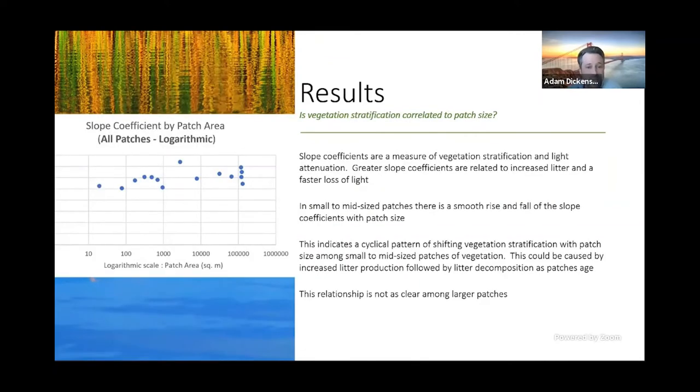Is vegetation stratification, so the sub-canopy of the vegetation, correlated to patch size? So here I'm looking at the light decay coefficients and I plotted them by patch size. And from this we see that there is a smooth rise and then fall of the light decay coefficients with increasing patch size. And while this is less clear in larger patch sizes, this does indicate a shifting in vertical stratification with patch size among small to mid-sized patches.